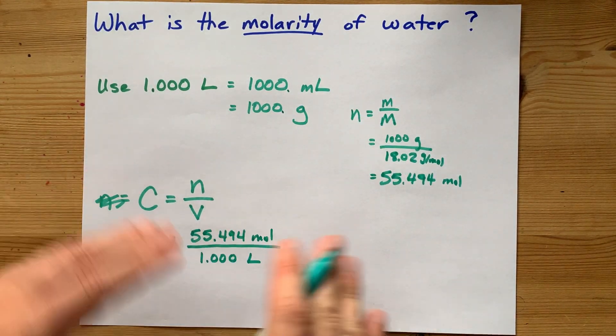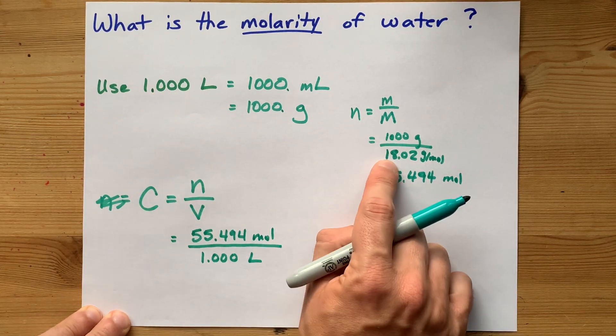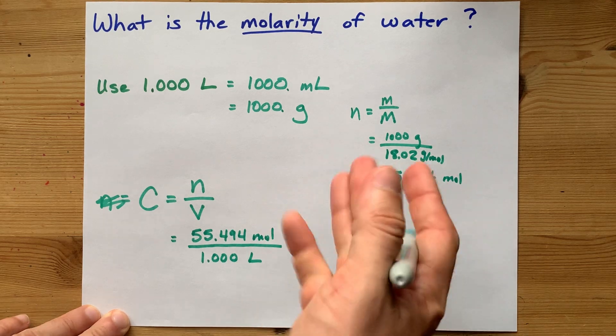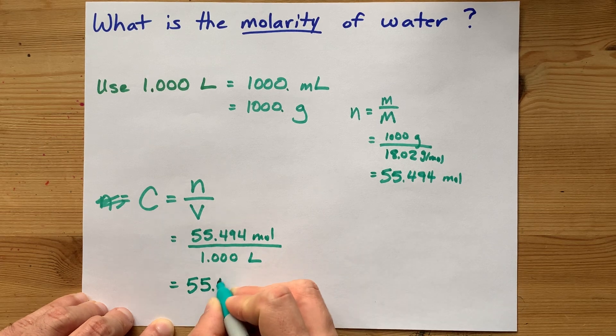Now, I'm just going to try to be careful with sig figs, but I really just picked an arbitrary number here. This, 18.02, is where I made the rounding errors, if any. So, I'm going to use four sig figs.